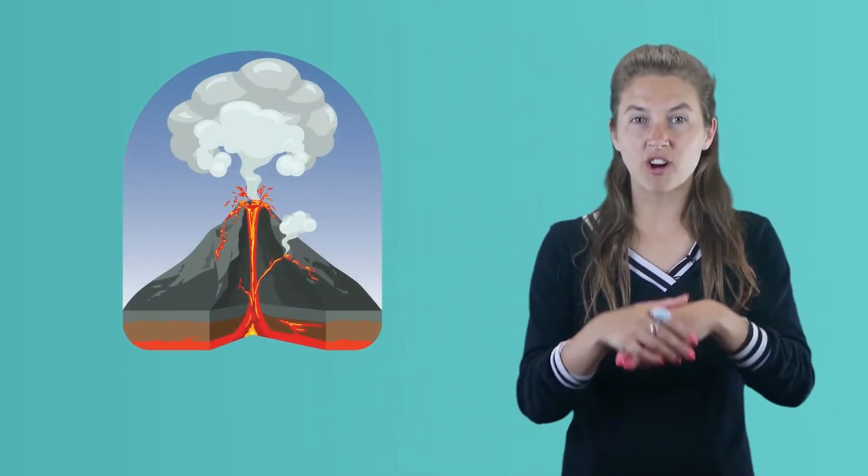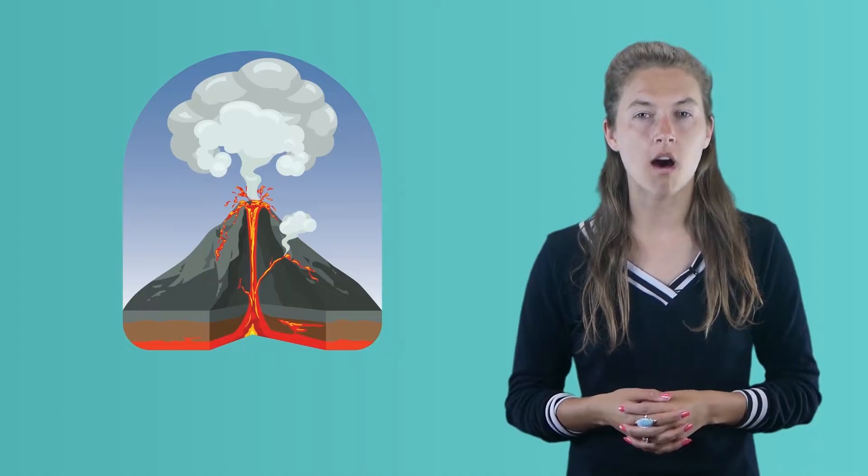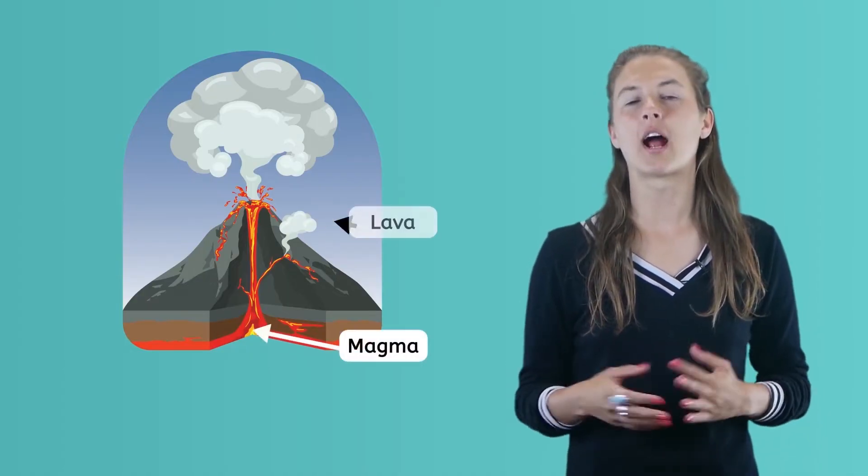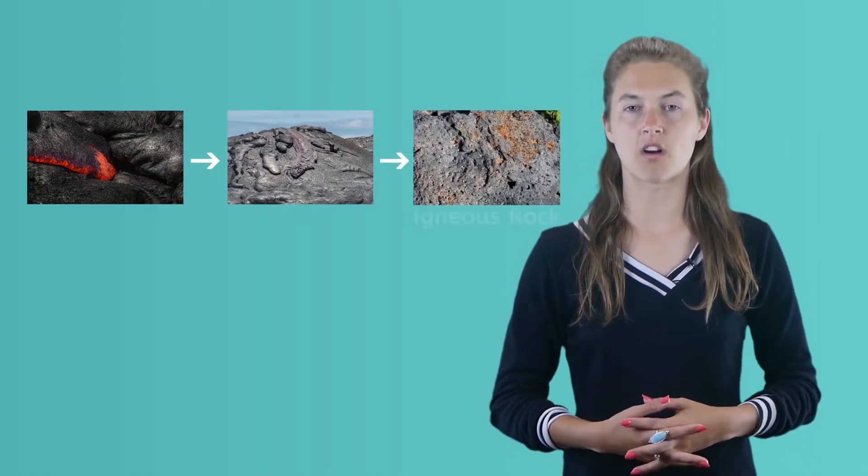Let's just focus on how rocks are formed in the first place. Magma flowing out of a volcano eventually cools off, either inside the earth or outside as lava. The magma forms minerals and becomes igneous rocks.